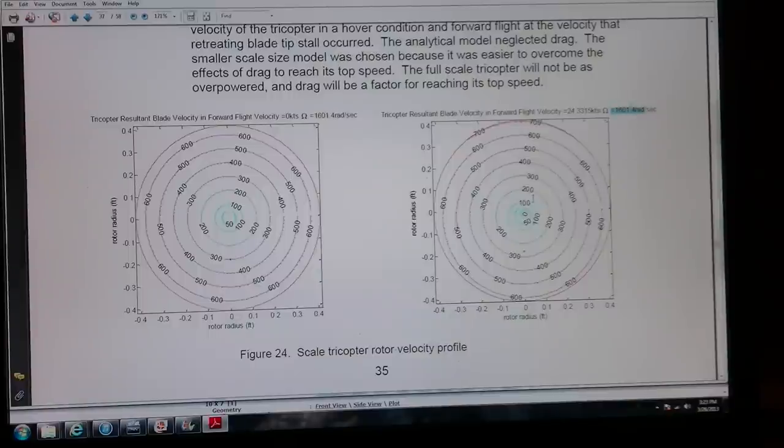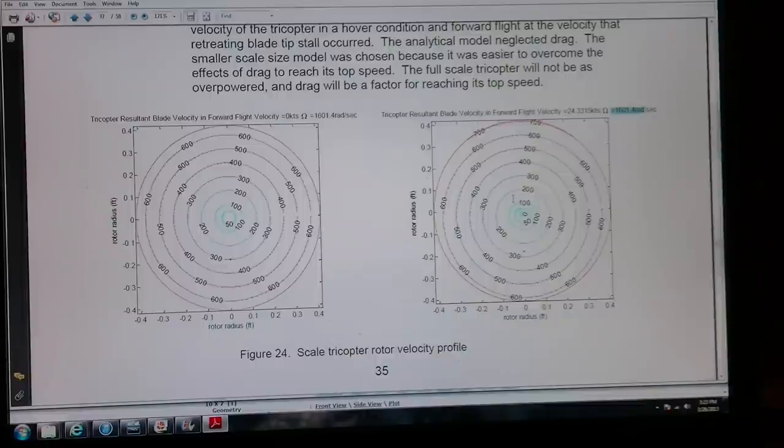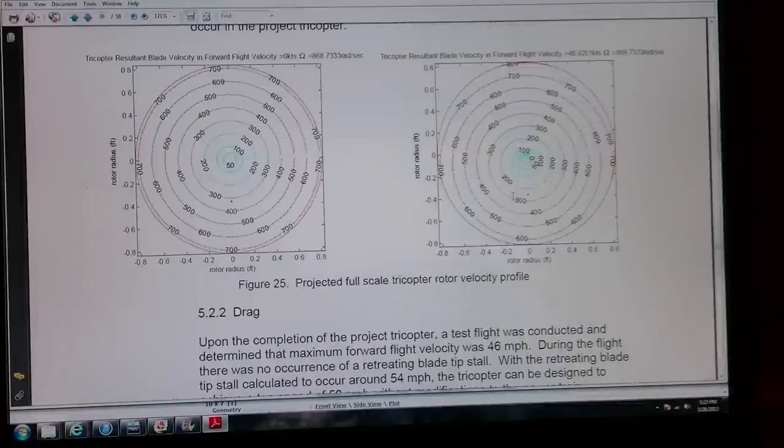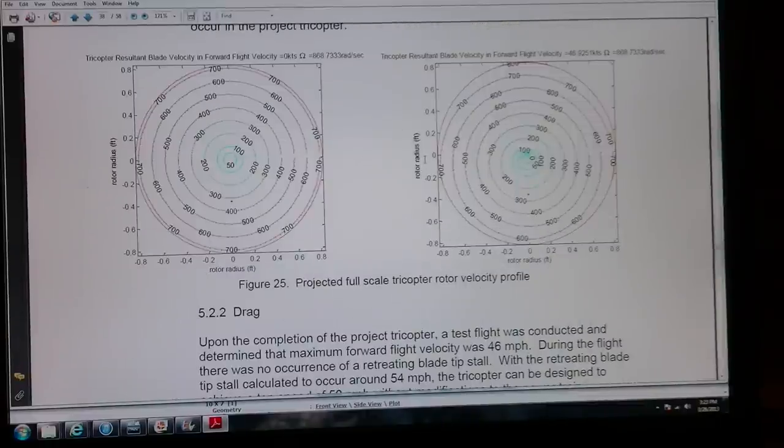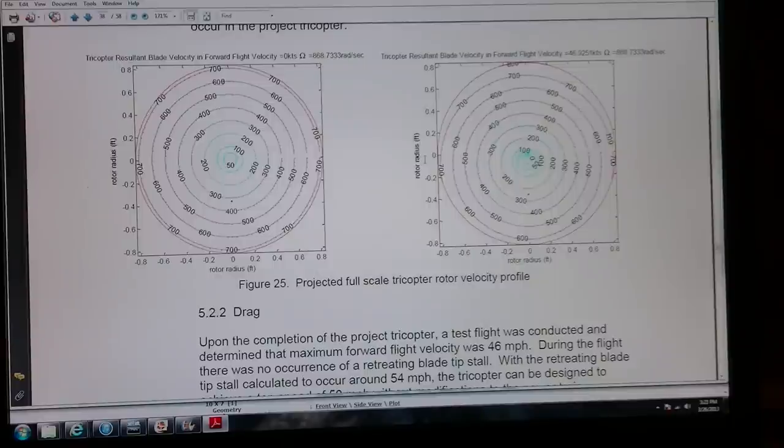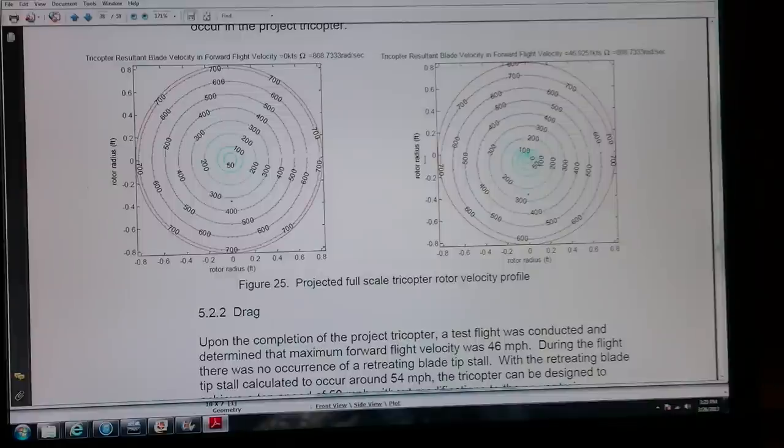So then I extrapolated the length of the bubble and put it onto my 10 inch diameter propeller blade and determined that my max speed is going to be approximately about 46.9 knots, which basically occurs at about 54 miles per hour.